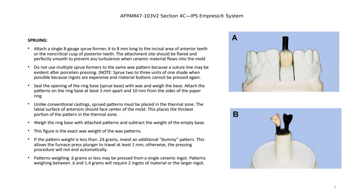Spruing is very important. There are differences between how we sprue a porcelain fused to metal coping and a coping for all ceramics, and also the investment rings used differ. For porcelain fused to metal, we attach the sprue on the thickest part of the coping at a 45-degree angle. For all ceramics, we also attach the sprue on the thickest part of the crown, but at a 90-degree angle — straight.